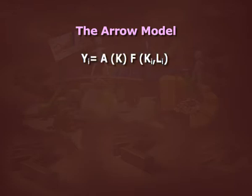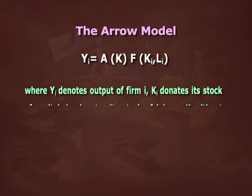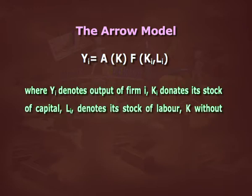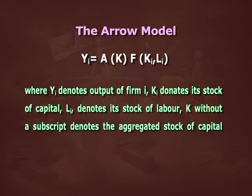Let us learn the Arrow model. Arrow was the first economist to introduce the concept of learning by doing, regarding it as endogenous in the growth process. His hypothesis was that if new capital goods are built with all available knowledge based on accumulated experience, their productive efficiencies cannot be changed by subsequent learning. Arrow's model is represented as: yi = A(k) · f(ki, li), where yi denotes output of firm i, ki is its stock of capital, li is its stock of labor, k (without subscript) is the aggregated stock of capital, and A is a technology factor.